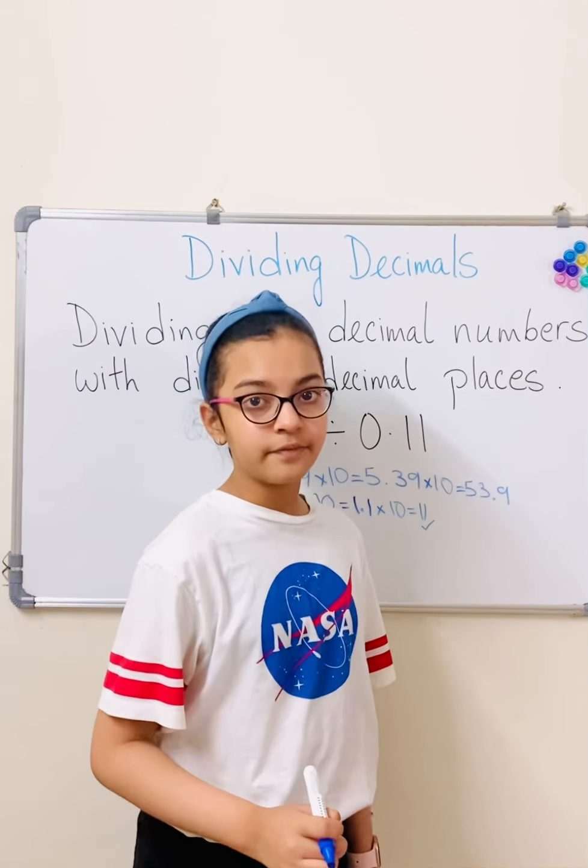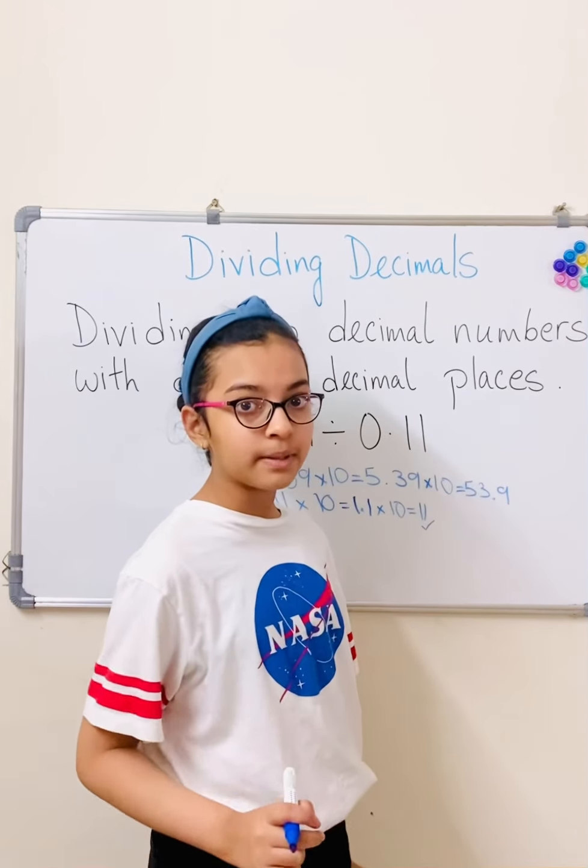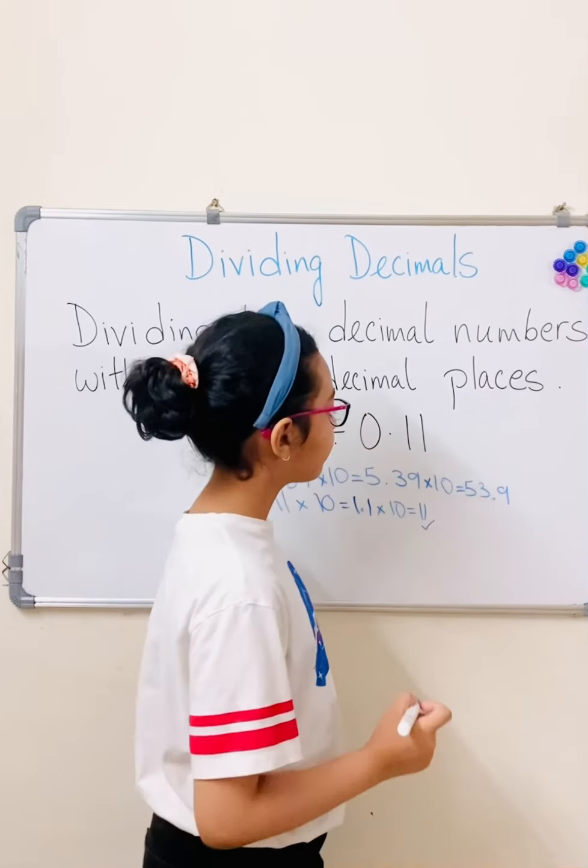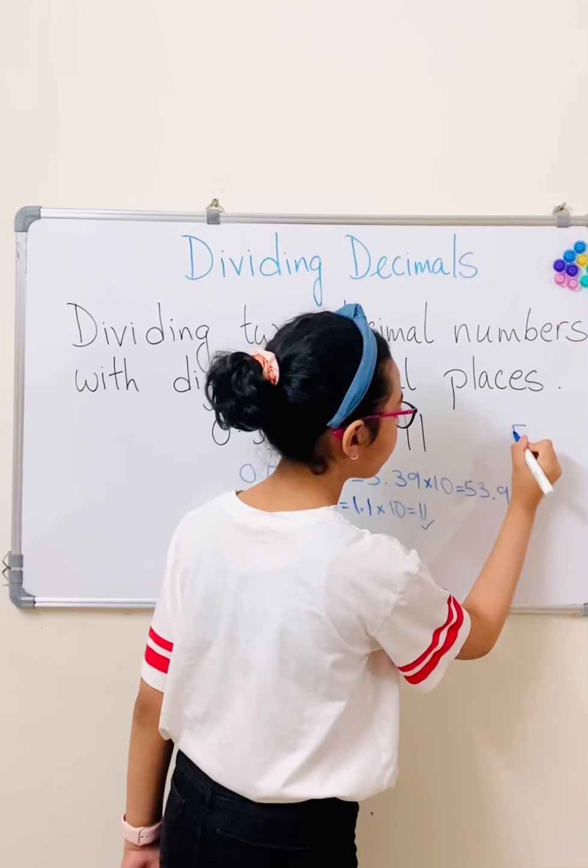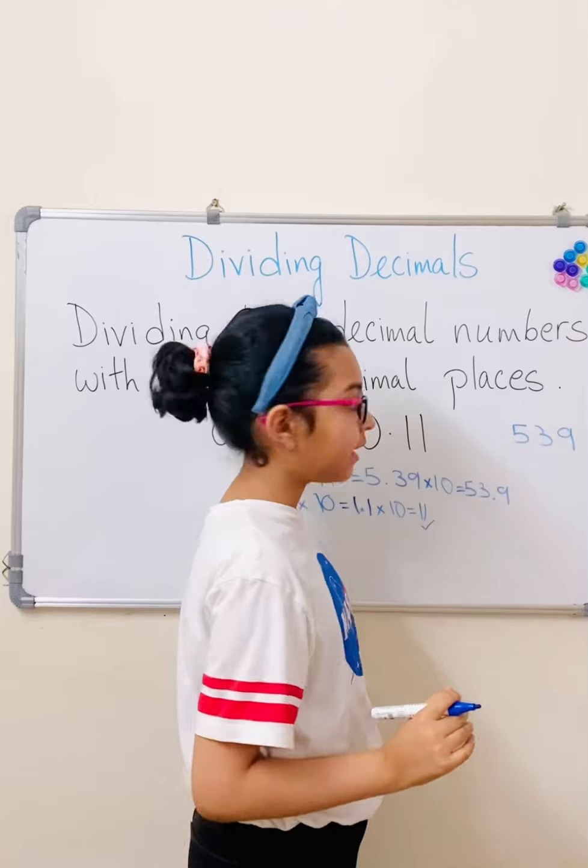But when we're doing the division, we're going to imagine there was no decimal point in the first place. So let's begin. 53.9 is going to become 539 for now.